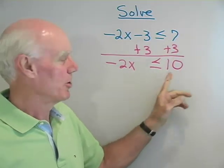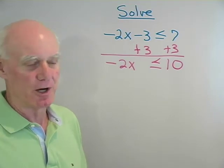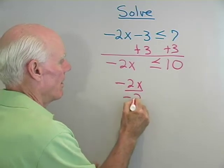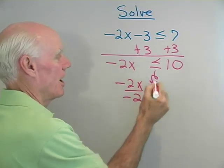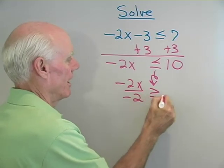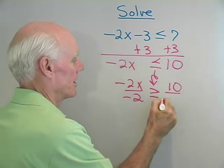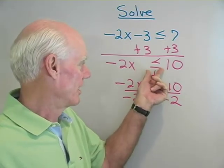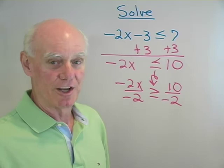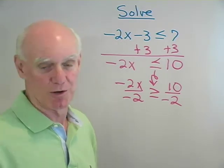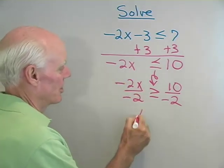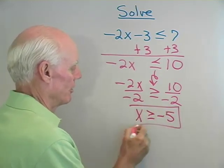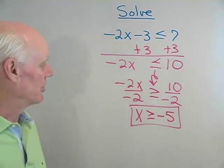Next, I want to multiply both sides by negative one-half, or equivalently divide both sides by negative 2. When I do that, I have to, at the same time, reverse the direction of the inequality. That's probably the most common mistake people make when just starting out — forgetting to reverse the direction of the inequality symbol when dividing or multiplying both sides by a negative number. So this gives me x greater than or equal to negative 5. There's my solution: x greater than or equal to negative 5.